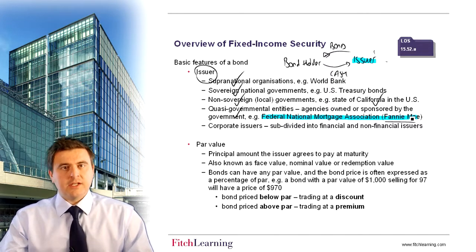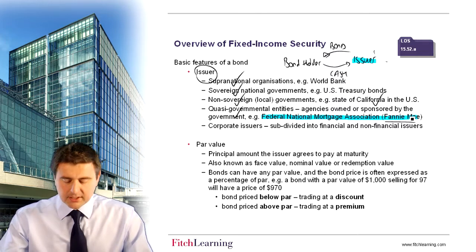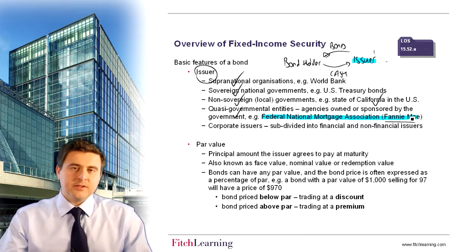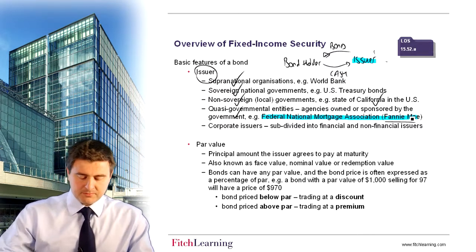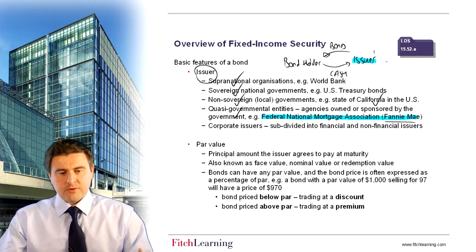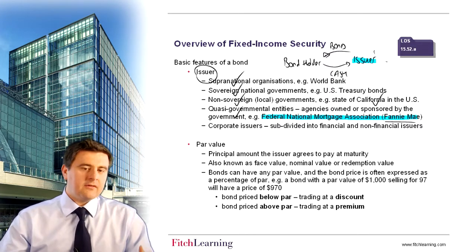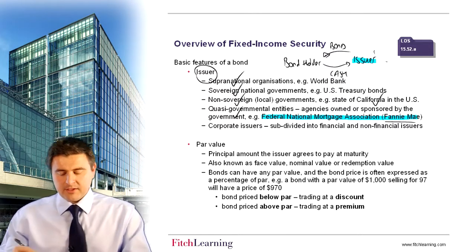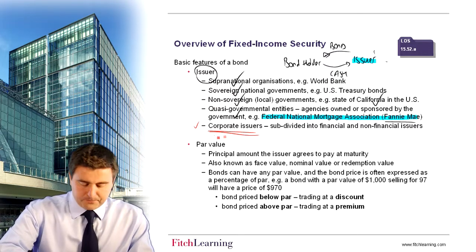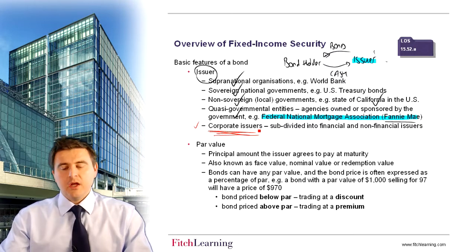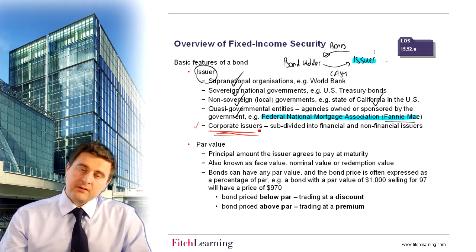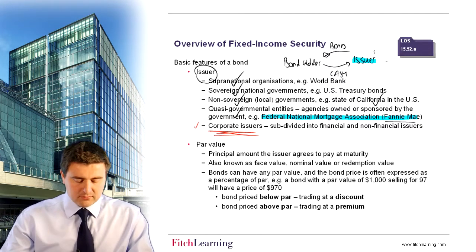Fannie Mae issues bonds in order to finance the purchase of mortgages from financial institutions, opening up the secondary market of the mortgage market. In order to do that, they need capital, and what they can do is issue bonds to raise that finance in order to purchase mortgages. That helps to free up the balance sheet of financial institutions, aiding the lending process. We'll talk about this concept of securitization in more depth in later readings. We also have corporate issuers — companies that, in order to finance projects, might issue a bond to the market, receiving cash that allows them to invest into that project.